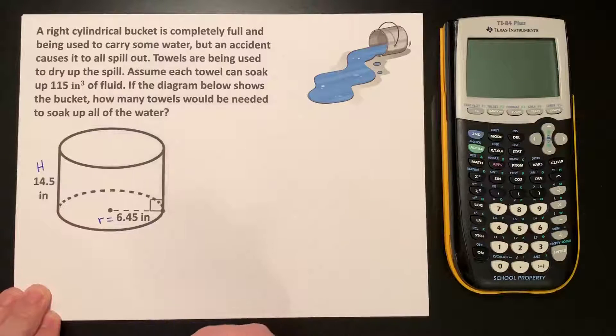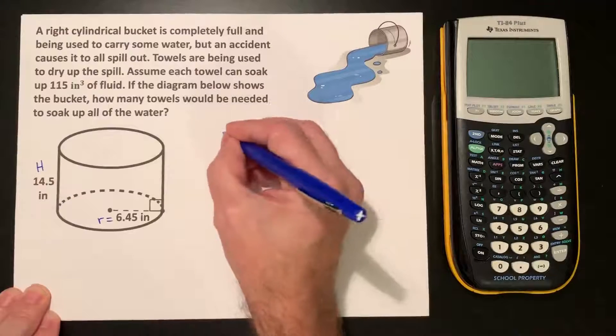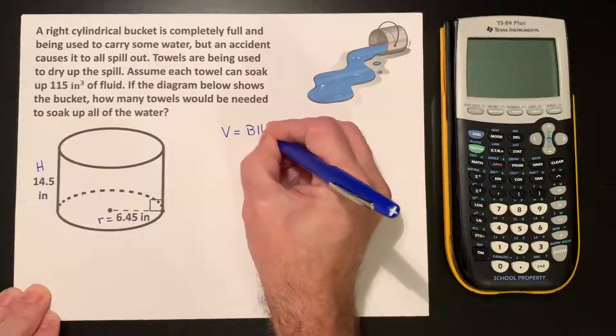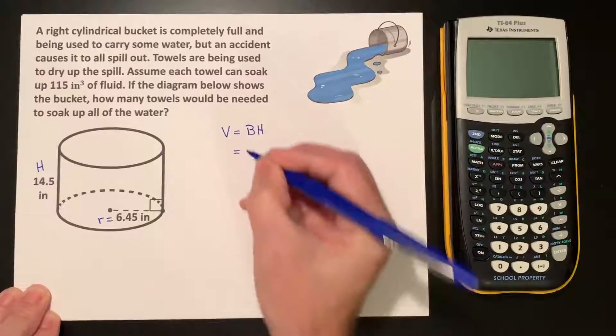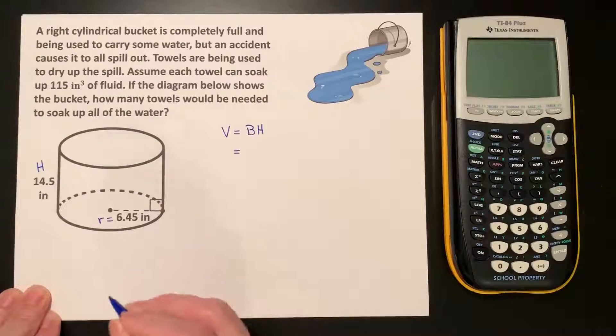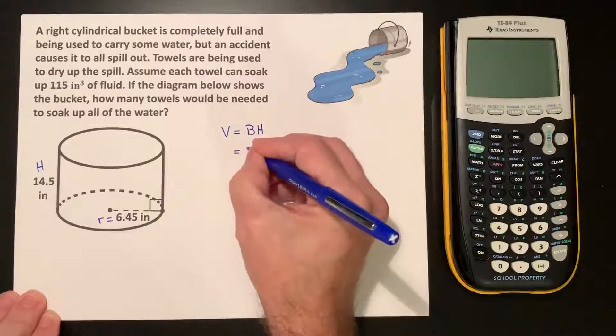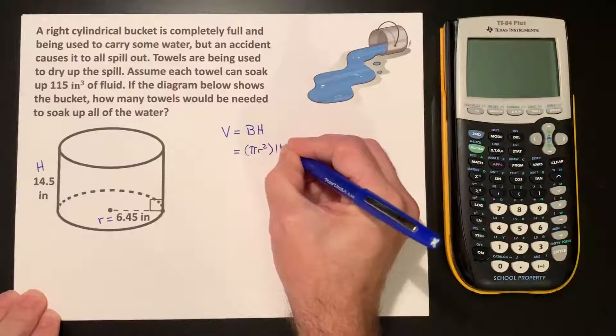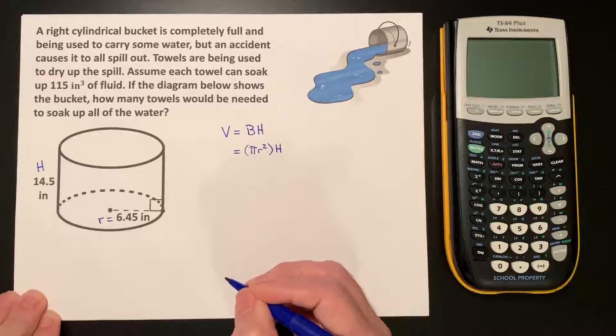We first have to figure out what is the volume of this bucket. The volume of any cylinder is BH, where B is the area of the base. In this case that is a circle, so B is πr². And of course H is the height of the cylinder.